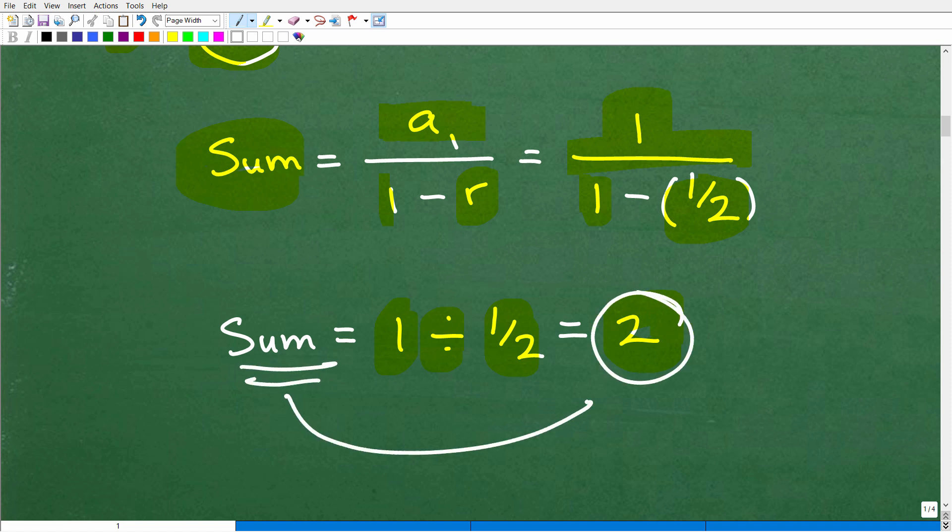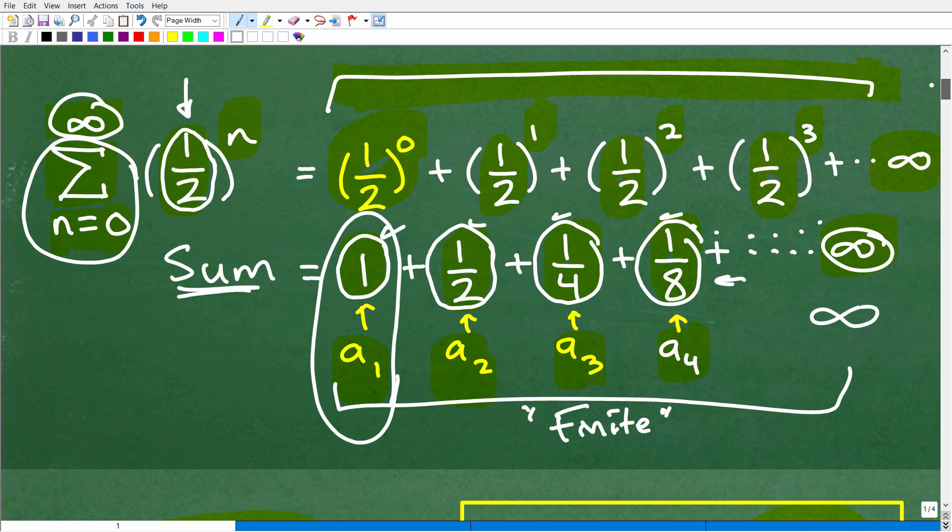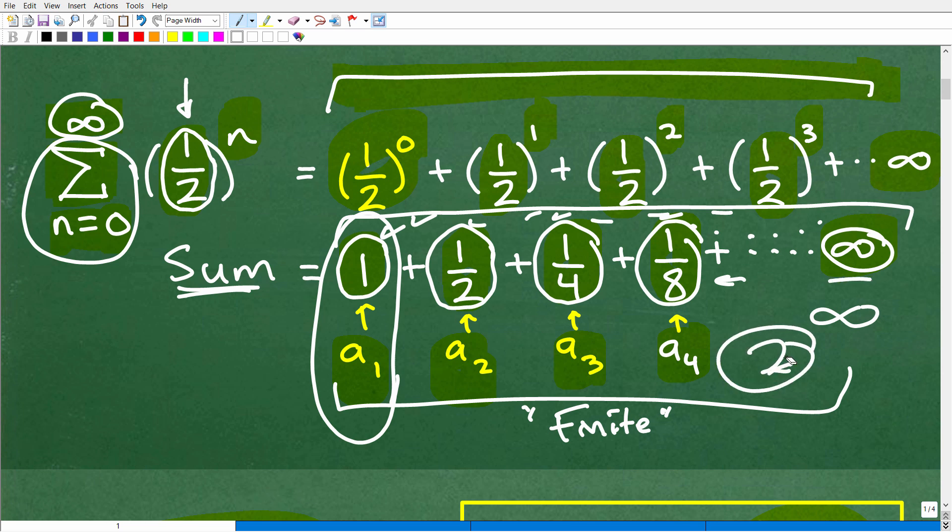The sum of this particular infinite geometric series is 2. In other words, up here, if we kept going forever and ever and ever to infinity and we added up all these terms out to infinity, the answer would be 2.